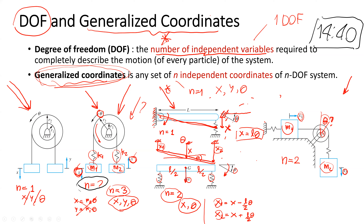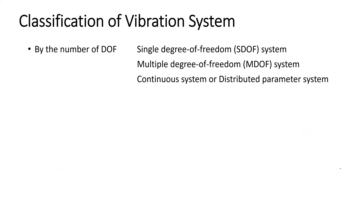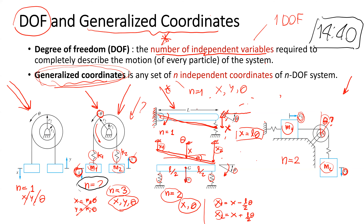The types of vibration system — we can categorize by the number of degrees of freedom. In the previous slides we are already familiar with how to count the number of degrees of freedom. If the system has only one degree of freedom, the vibration will be the vibration of a single-degree-of-freedom system.